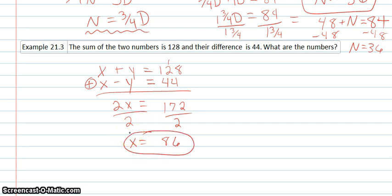So I can plug that in to either one of those equations. I'll just use the top one. I'll have 86 plus y equals 128. And then just subtract 86 on both sides. Y equals, that's 2, that's 42. And so we found the two numbers.